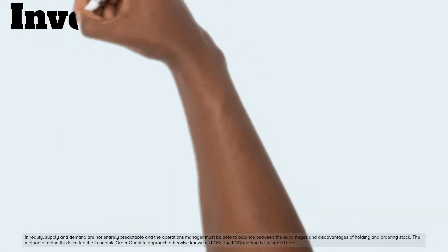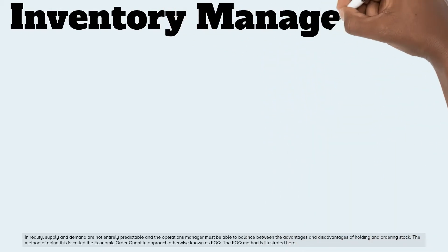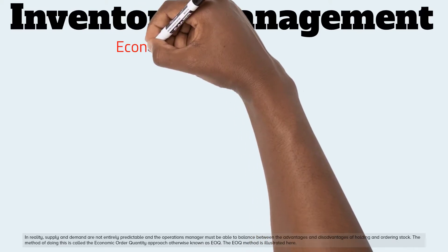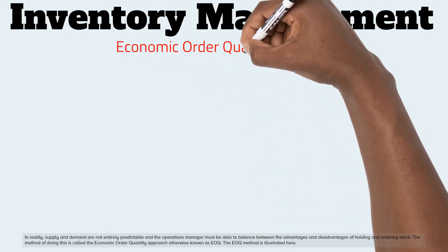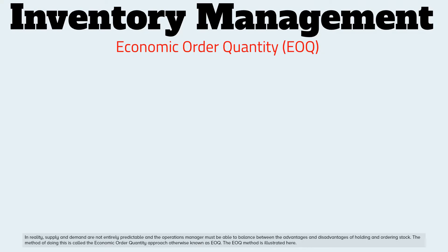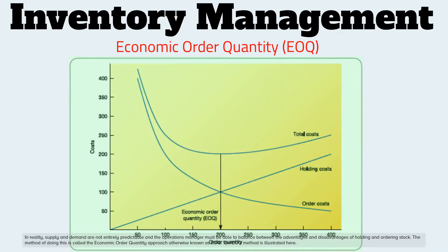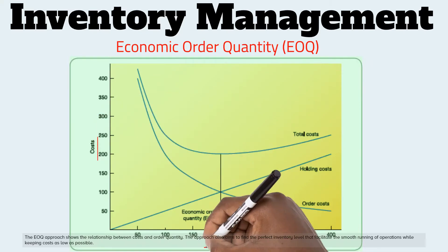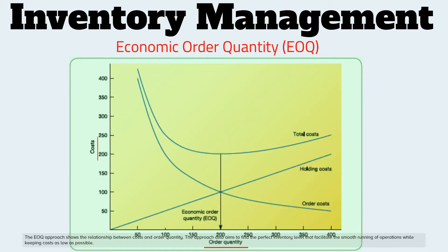In reality, supply and demand are not entirely predictable, and the operations manager must be able to balance between the advantages and disadvantages of holding and ordering stock. The method of doing this is called the economic order quantity approach, otherwise known as EOQ. The EOQ approach shows the relationship between costs and order quantity, and aims to find the perfect inventory level that facilitates the smooth running of operations while keeping costs as low as possible.